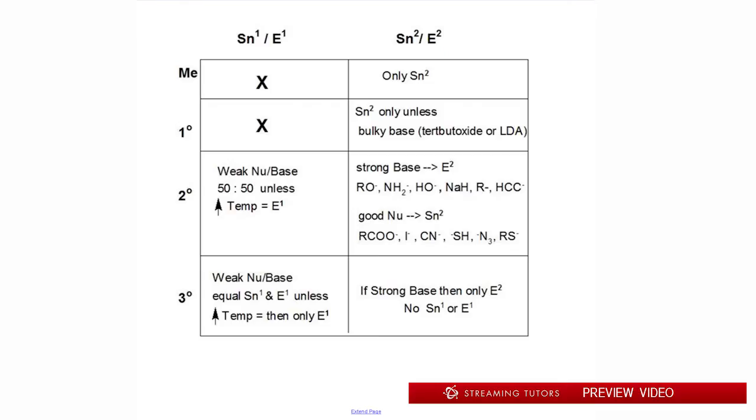Now the next chart, this one is the most important. The chart I just showed you is used when you want to think about one type of pathway in all of its favorite things. So if you know you're looking at E2, you could look through that to figure out what makes one better than another. This chart tells you in a reaction, what most likely is going to happen. That's what this chart's about.